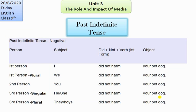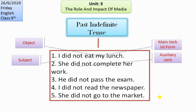This chart shows negative sentences. The rule is: subject plus 'did not' plus verb in first form plus object. For example, 'I did not harm your pet dog.' Remember one important point: with the auxiliary verb 'did,' we always use the base form — the first form of the main verb.